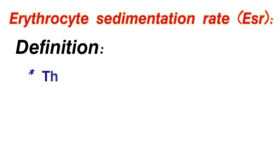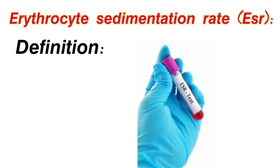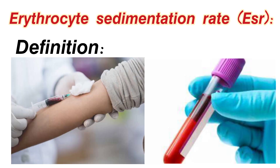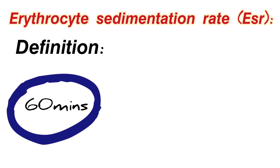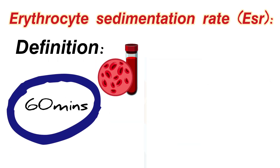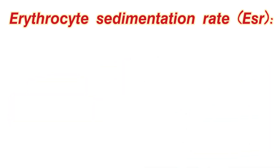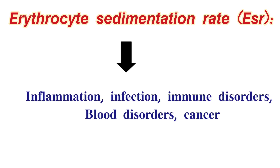Erythrocyte sedimentation rate is a type of blood test. We collect the patient's blood sample, place it in a tube, and after one hour we measure how much the red blood cells have settled. The purpose of this test is to detect conditions like inflammation, infections, blood disorders, immunity disorders, and cancer.